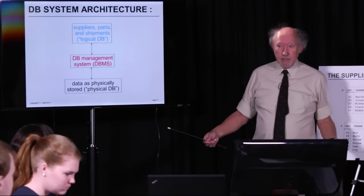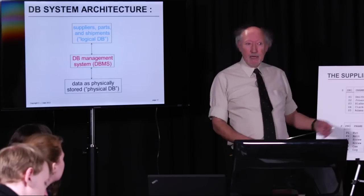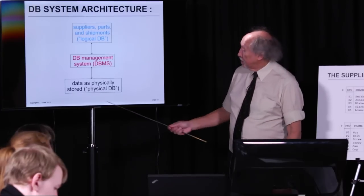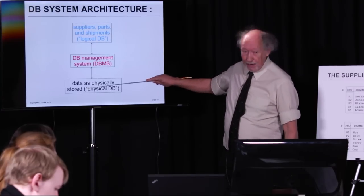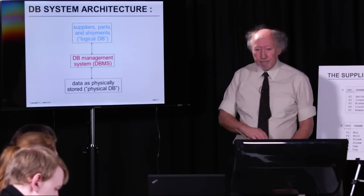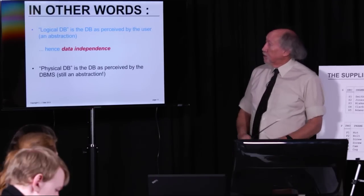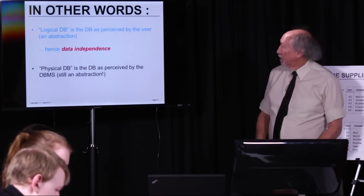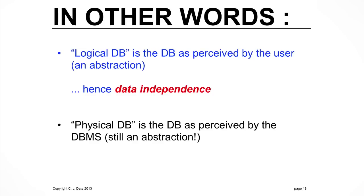In between the logical and physical levels, we have a piece of software called the database management system, or DBMS. The DBMS is what allows the user to think of the physical database as if it were a logical database. The user issues requests — like 'give me information about suppliers in London' — formulated in terms of the logical database. The DBMS interprets that request and executes it in terms of the physical database. So the DBMS hides the physical database from the user.